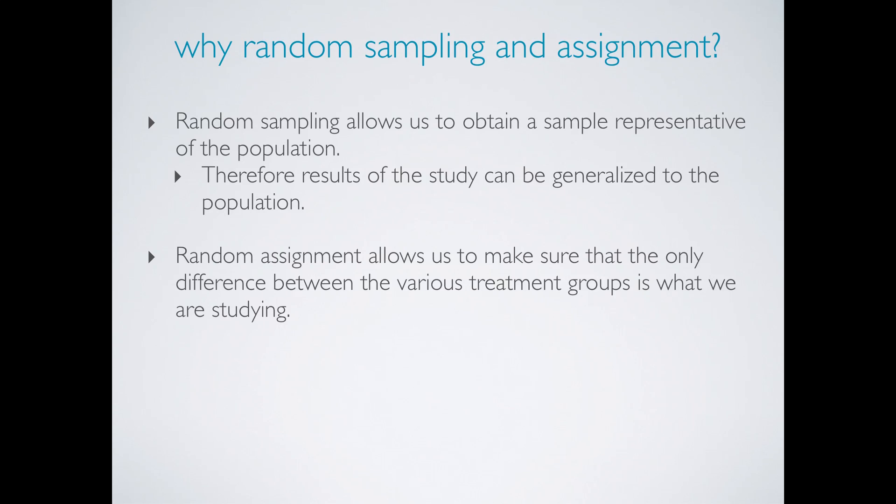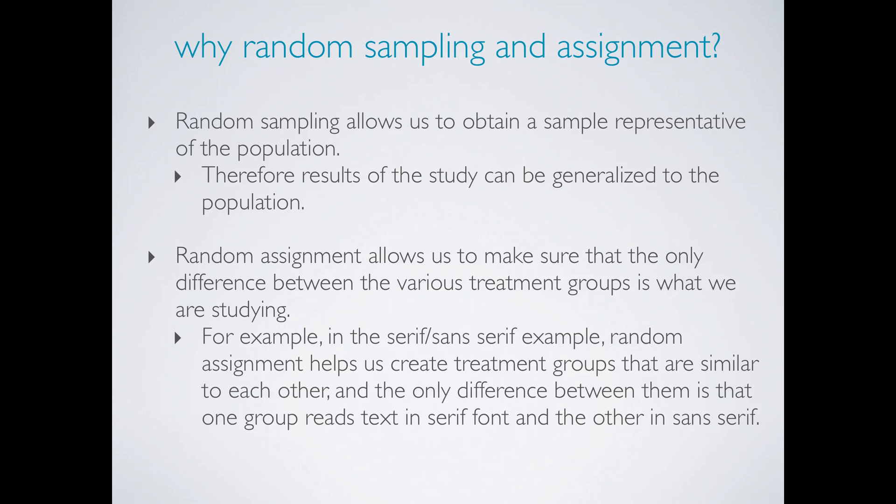Random assignment allows us to make sure that the only difference between the various treatment groups is what we're studying. For example in the serif sans serif example, random assignment helps us create treatment groups that are similar to each other and the only difference between them is that one group reads text in serif font and the other in sans serif. Therefore causality can be inferred.